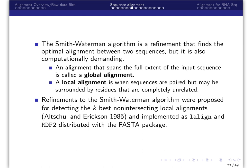Smith-Waterman alignment is a local alignment method that finds the optimal alignment between two sequences by comparing segments of all possible lengths and optimizing a similarity measure. An alignment that spans the full extent of the input sequence is called a global alignment, such as Needleman-Wunsch. A local alignment, like Smith-Waterman, is when sequences are paired but may be surrounded by residues that are completely unrelated.